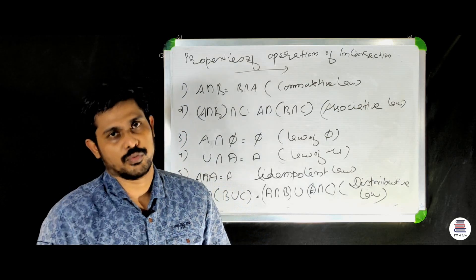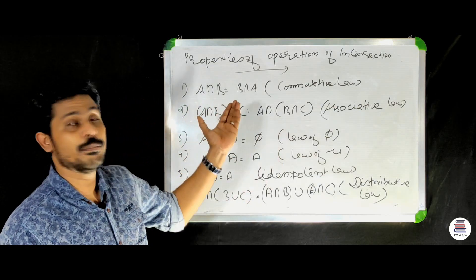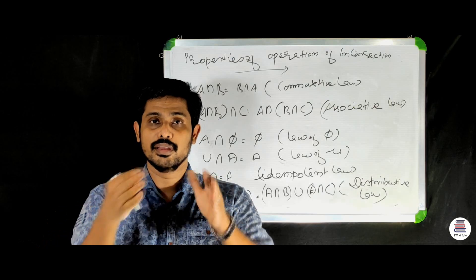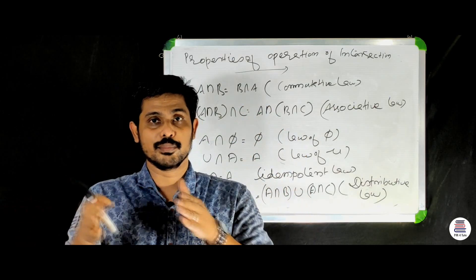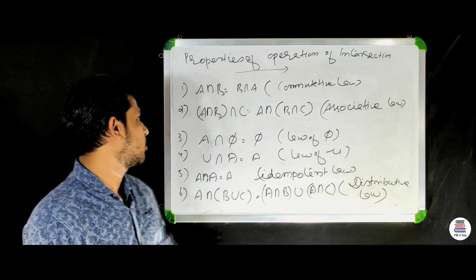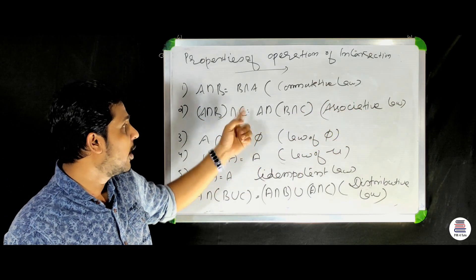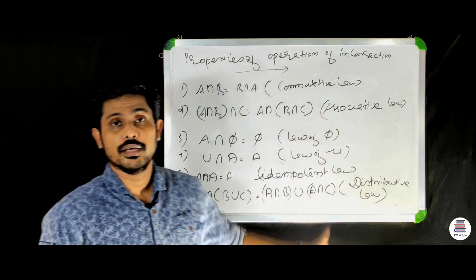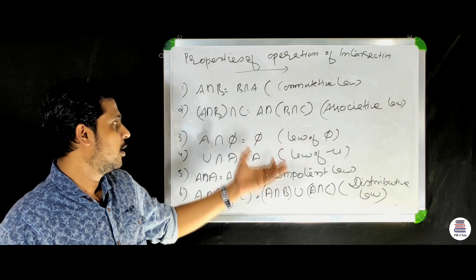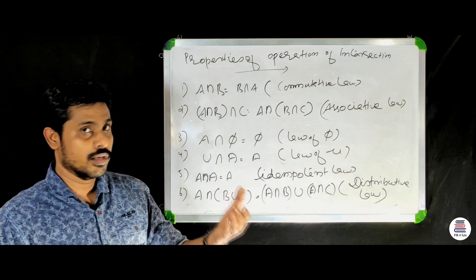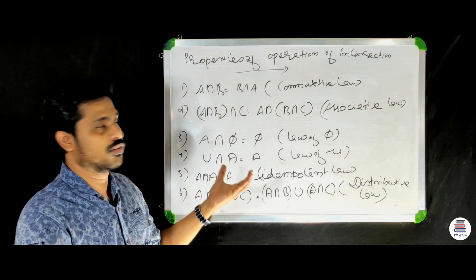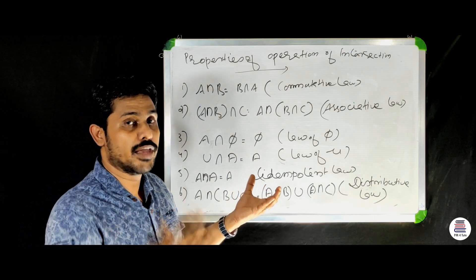The properties of intersection: First, A intersection B equals B intersection A — commutative law. Second, A intersection (B intersection C) equals (A intersection B) intersection C — associative law. Third, A intersection null set equals null set — this is the law of the null set.